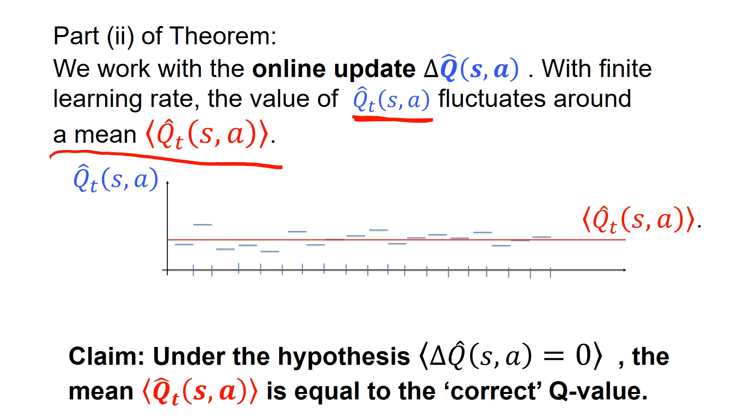So what do I mean by this? Well, Q hat in the first time step, maybe this value. In the second time step, it's this. In the third time step, it's this and so forth. So sometimes we go up, sometimes we go down.